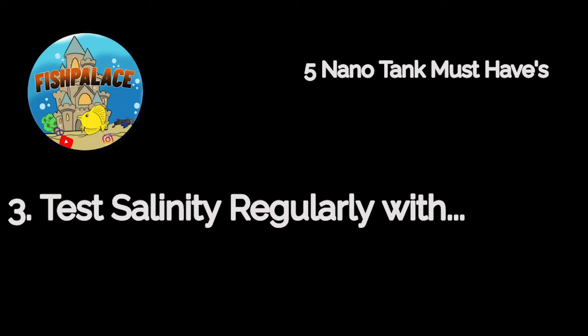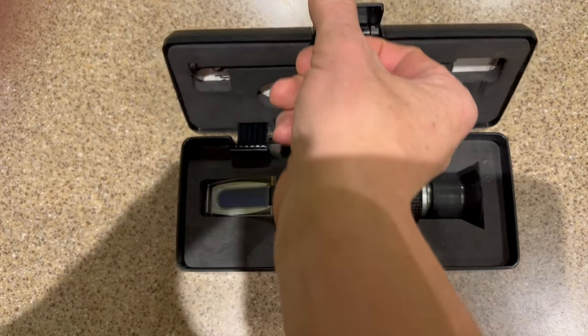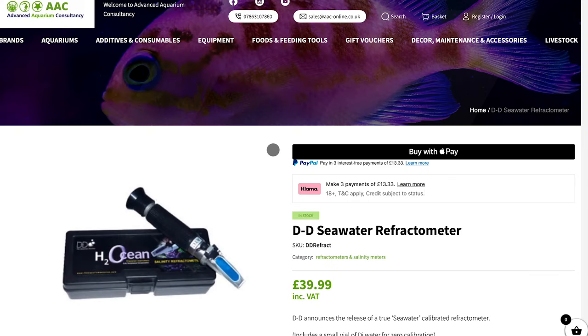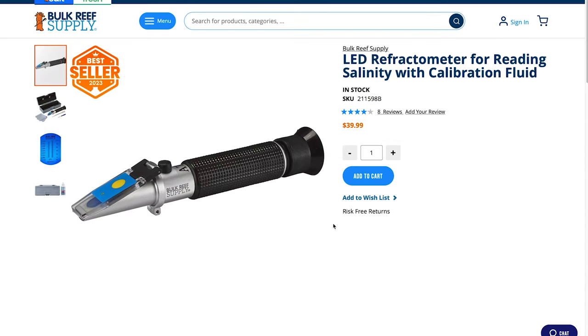So for number three I would say salinity. It's a really important parameter and also what I use to test that salinity is twofold. Either I use a refractometer which has been around for donkey's years, it's fairly cheap. You can get one for about £40 in the UK and maybe about $40 to $50 in the US. I would say it's a must-have.